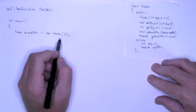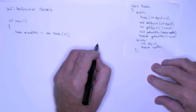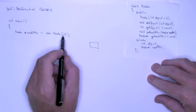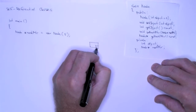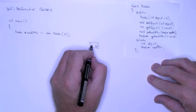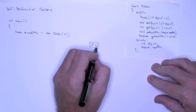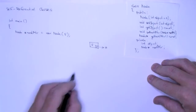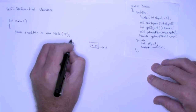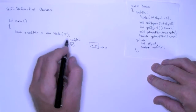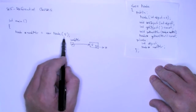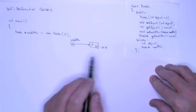When this executes, first thing that happens is the runtime environment allocates space for a node — we get a pointer and we get space for an integer. Then the constructor executes: it stores five in the private data member and sets the next pointer to null. Then new returns the address, which we store in node pointer. So node pointer points to this new dynamically allocated node object with the value five and its next pointer pointing to null.